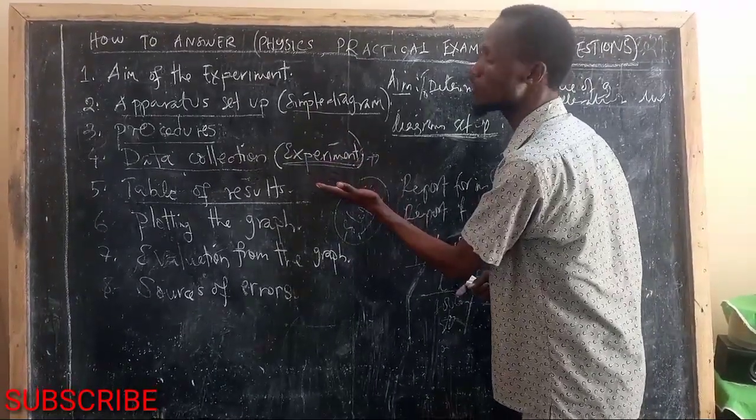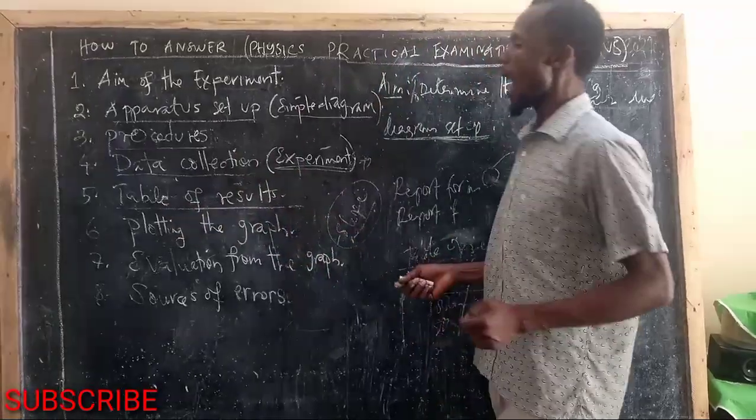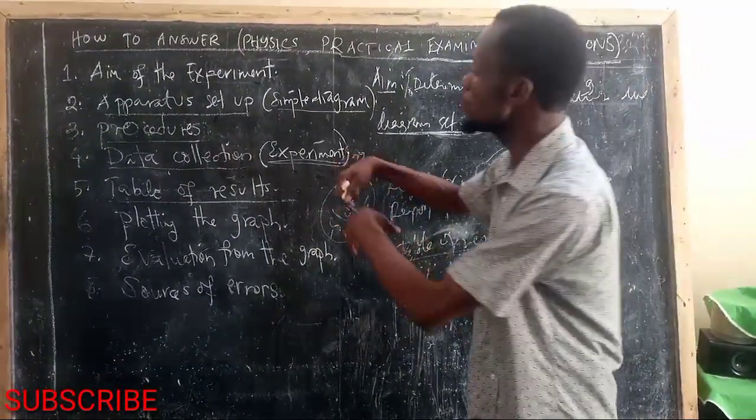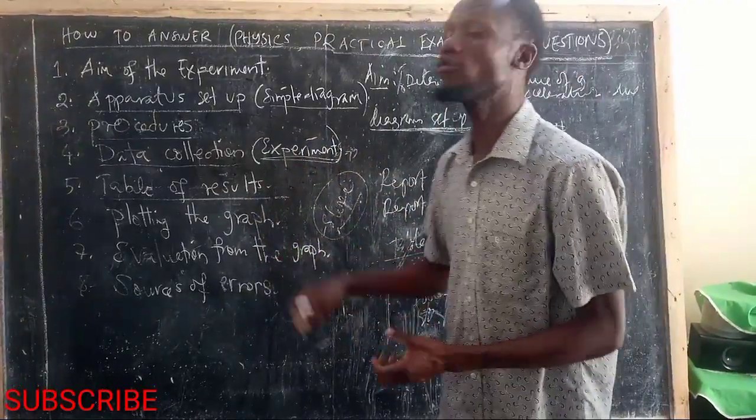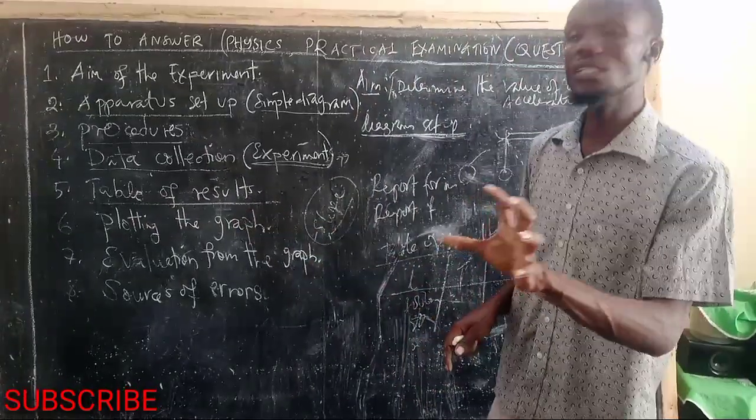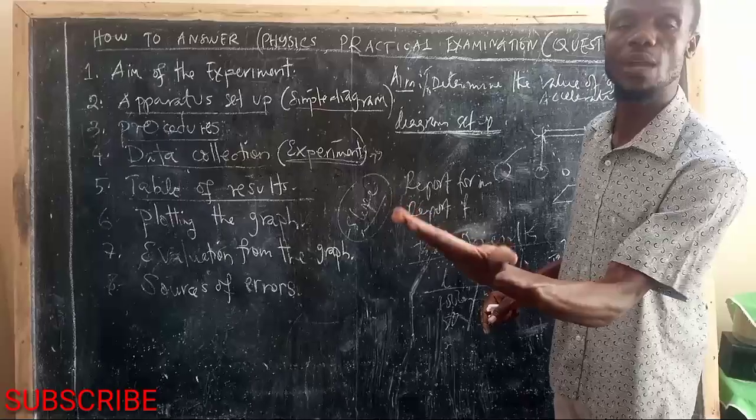After you have conducted experiments, what you obtain from the experiment, you have to represent them on the table of results. So this is definitely used so as to show what you got from the experiment.